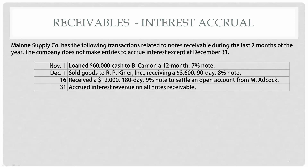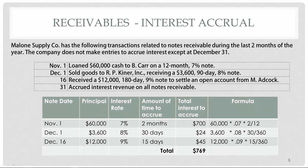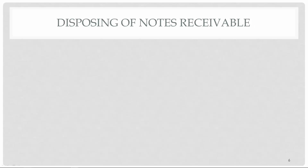To calculate the interest for each note, we look at the date the note was issued and figure out how much time has passed between that date and December 31. For the November 1 loan, that's two months, so we take $60,000 × 7% × (2/12). For the December 1 sale, that's 30 days, calculated on a 30-day basis. For the $12,000 note from December 16, that's just 15 days. Our total interest is $769.